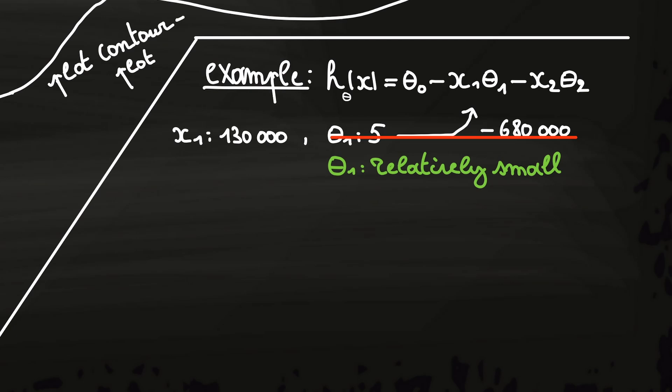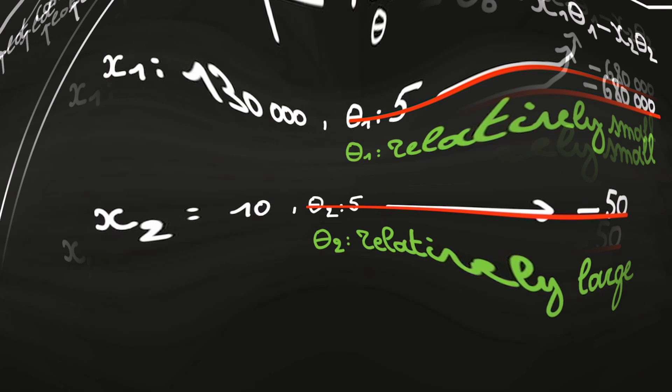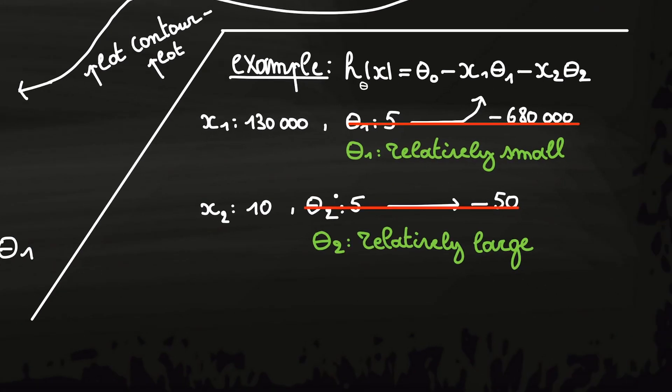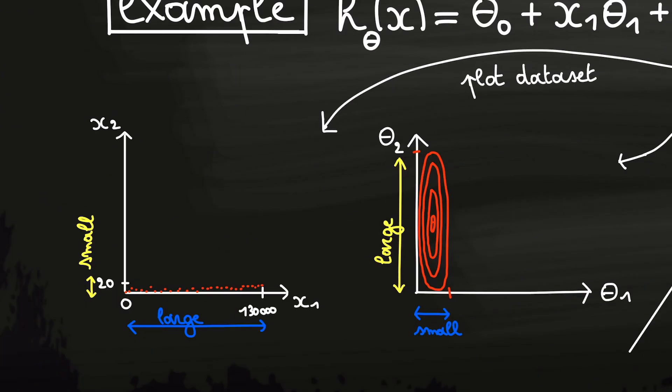The same can be said for the age of the car, x2. Because the age is relatively small, let's say we have a training example where x2 is equal to 10, and if you assume that theta2 is equal to 5, you would only subtract $50 from the price of the car. That's way too low. So, we see that theta2 should be a relatively large value. So, to recap, a big difference in ranges of the features results in a big difference in ranges of the parameters and thus in an elliptical contour plot.